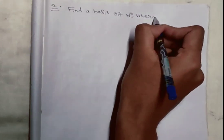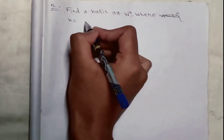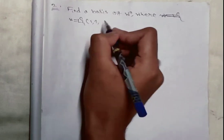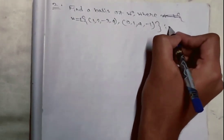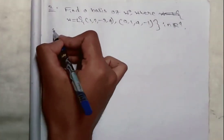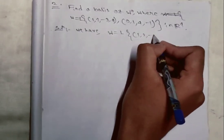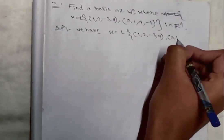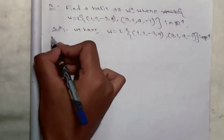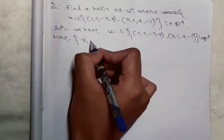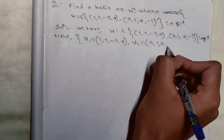Now the second question: find a basis of W⁰ where W equals the linear span of {(1,2,-3,4), (0,1,4,-1)} in R⁴. Here v₁ = (1,2,-3,4) and v₂ = (0,1,4,-1).